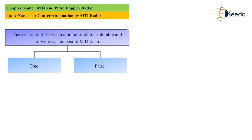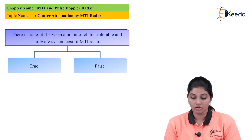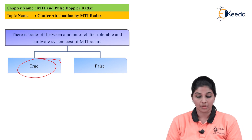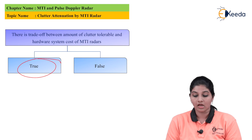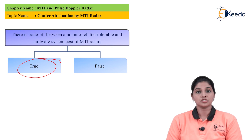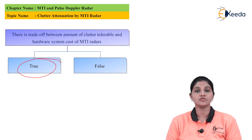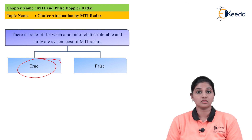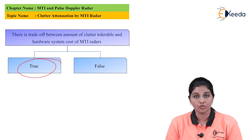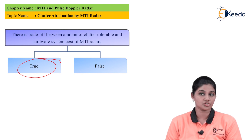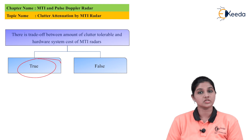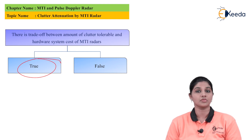The next question is: there is a trade-off between the amount of clutter tolerable and the hardware system cost of the MTI radar — true or false? The answer is true. When we increase the number of single delay line cancellers, it is possible to increase the value of clutter attenuation and get the desired signal at the output, but with a single delay line canceller it is not possible to remove the complete clutter. I hope you understand this topic — thank you very much for watching, stay tuned to iKira, subscribe iKira, thank you.